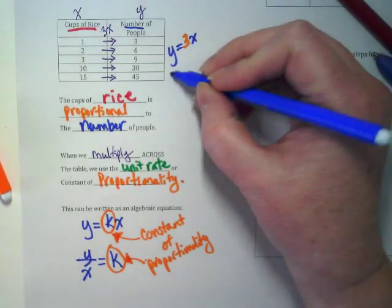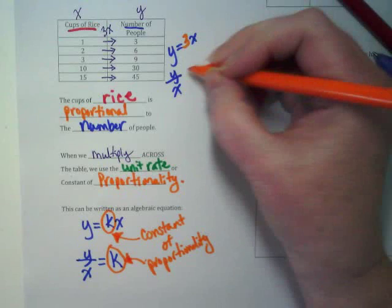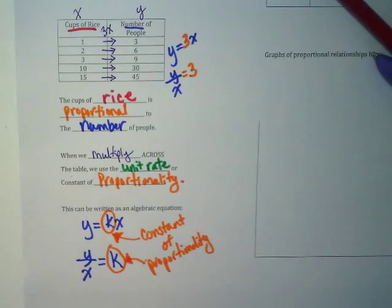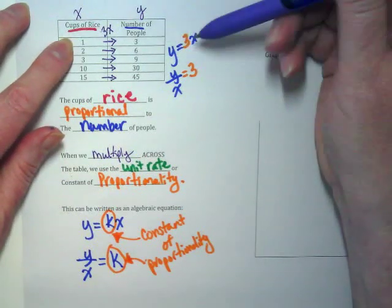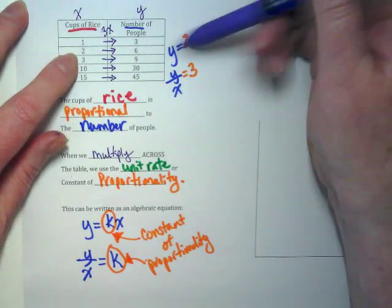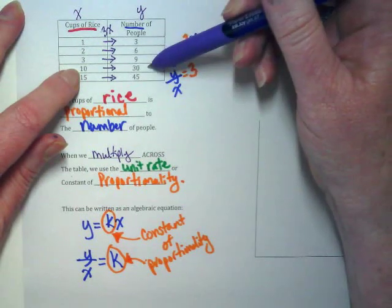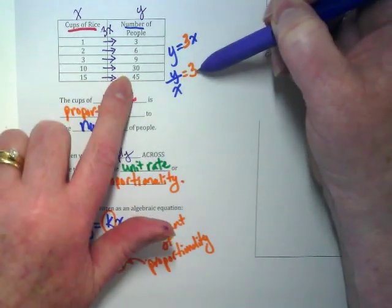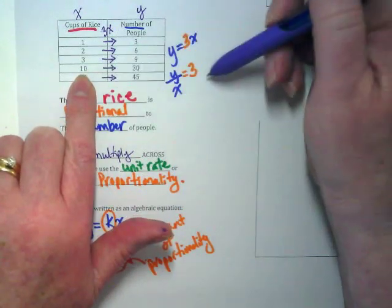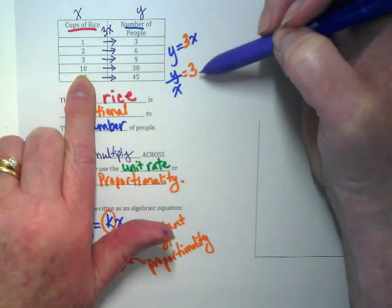Or, the other version of this would be y divided by x is equal to 3. What I put in orange is our constant of proportionality for this situation, true? And if you look at the numbers in the table that we have said are x and y, if I say 3 times 1 equals y, does 3 times 1 equal 3? Does 3 times 2 equal 6? Does 3 times 10 equal 30? But then the reverse is also true. If I take 45 divided by 15, I get 3. 30 divided by 10 gives me 3. Y divided by x is giving us the constant, which in this case is 3.